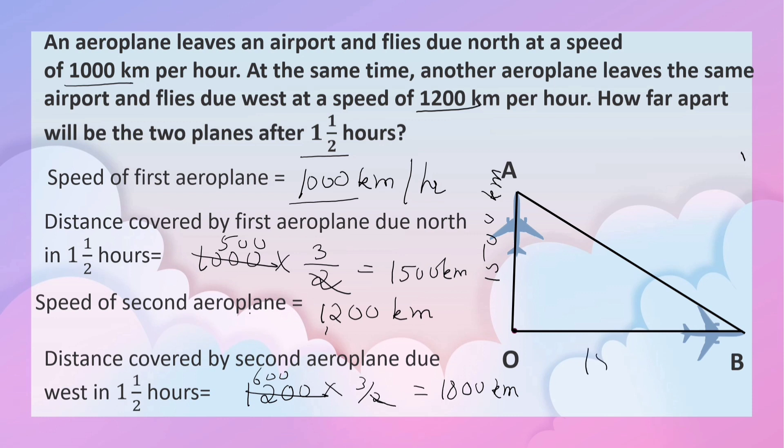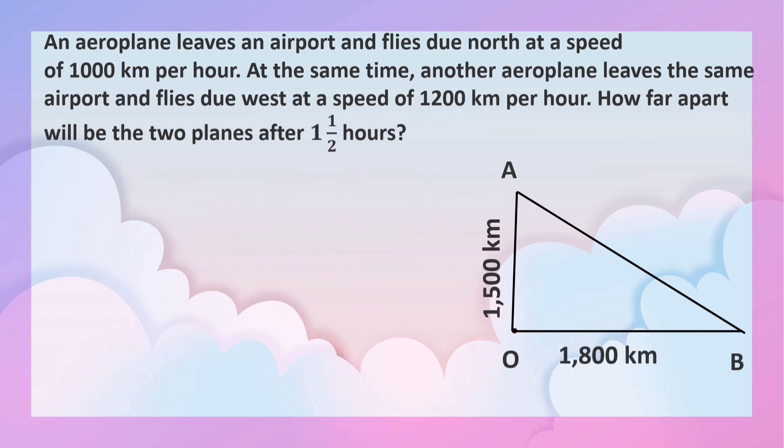So OB is 1800 km. Now we have to find the distance between AB. We can do it by using Pythagorean theorem. In right angle triangle OAB, AB is the hypotenuse. So AB square is equal to OA square plus OB square.